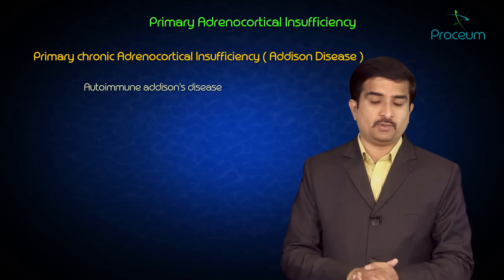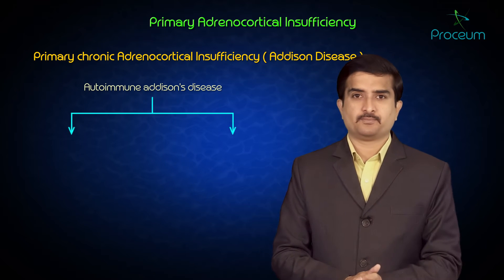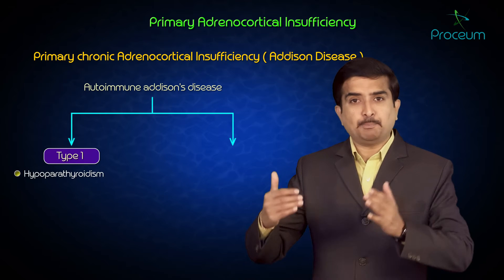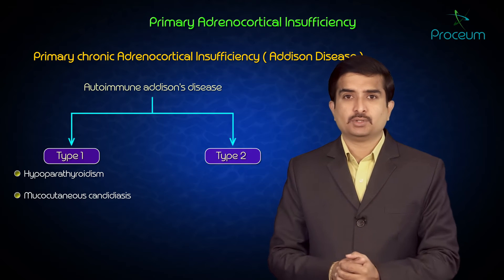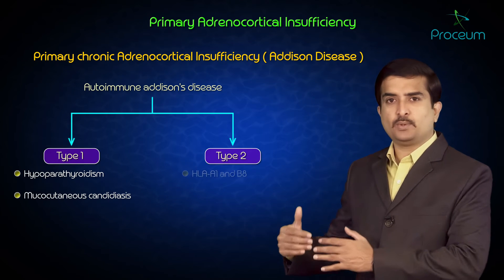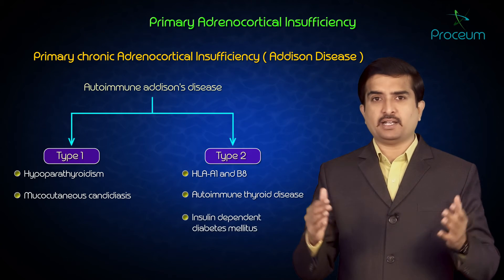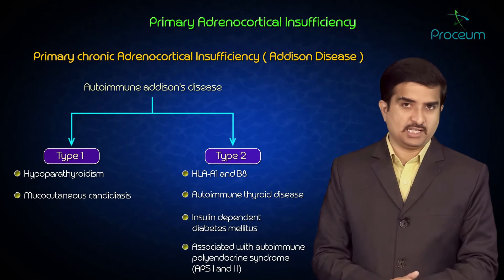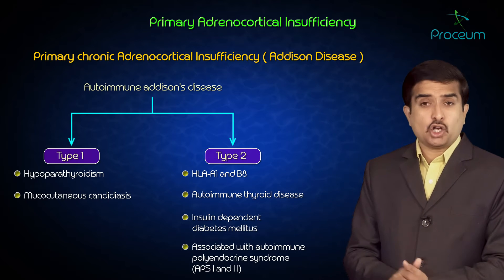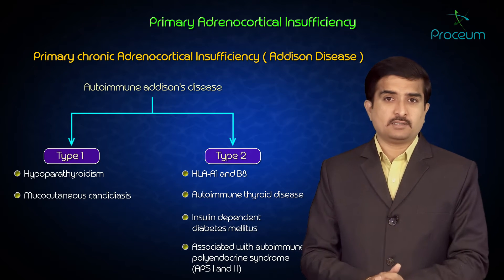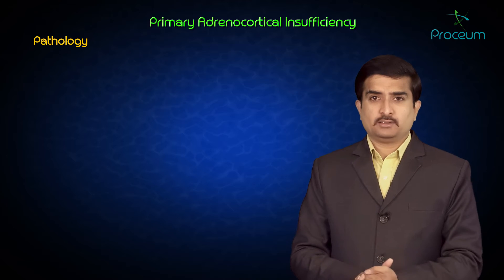Autoimmune Addison's disease, also called autoimmune adrenalitis, is of two types. In Type 1, there is hypoparathyroidism and mucocutaneous candidiasis. In Type 2, it is associated with HLA-A1 and B8, autoimmune thyroid disease, and insulin-dependent diabetes mellitus, especially with autoimmune polyendocrine syndrome (APS 1 and 2).